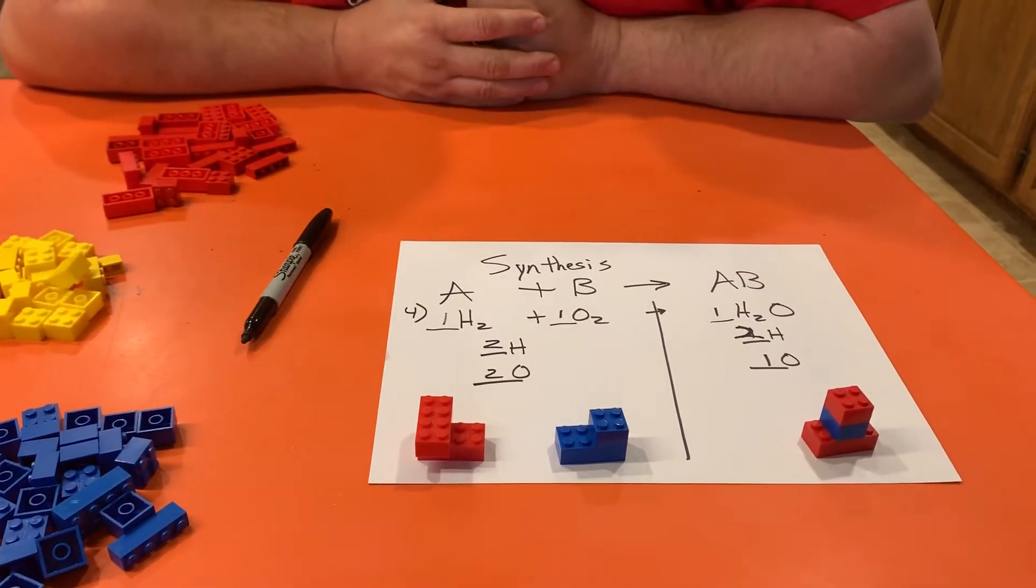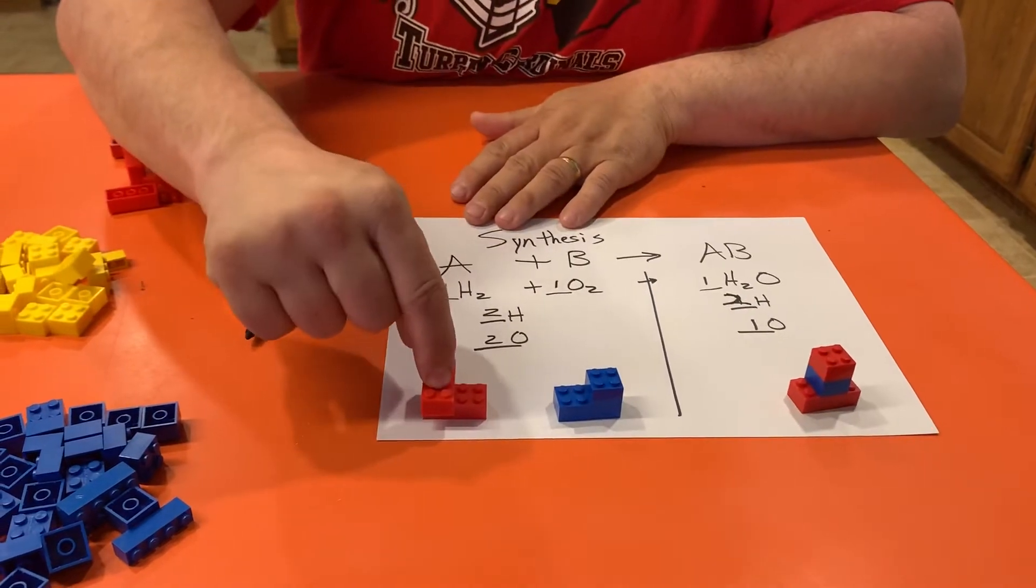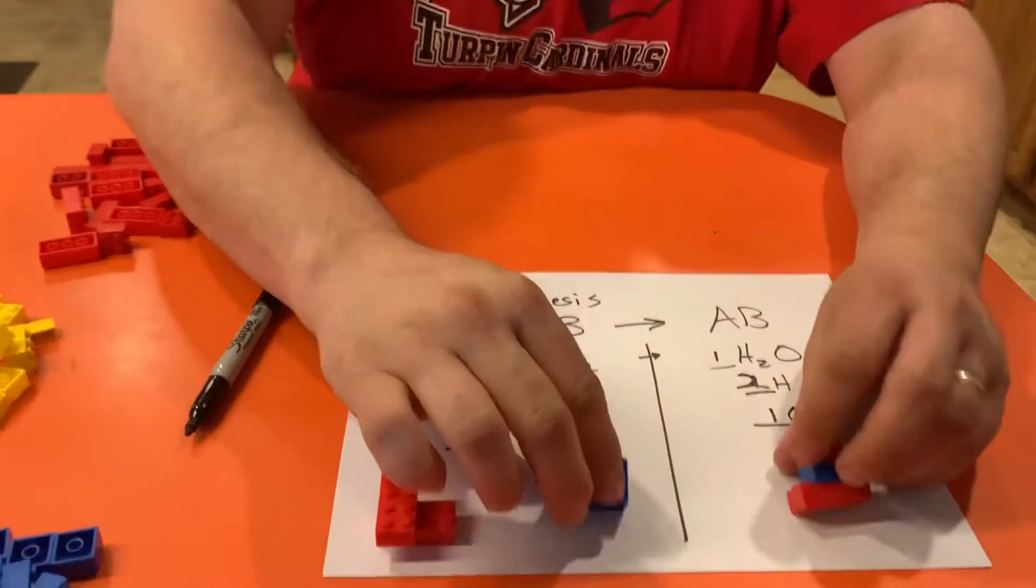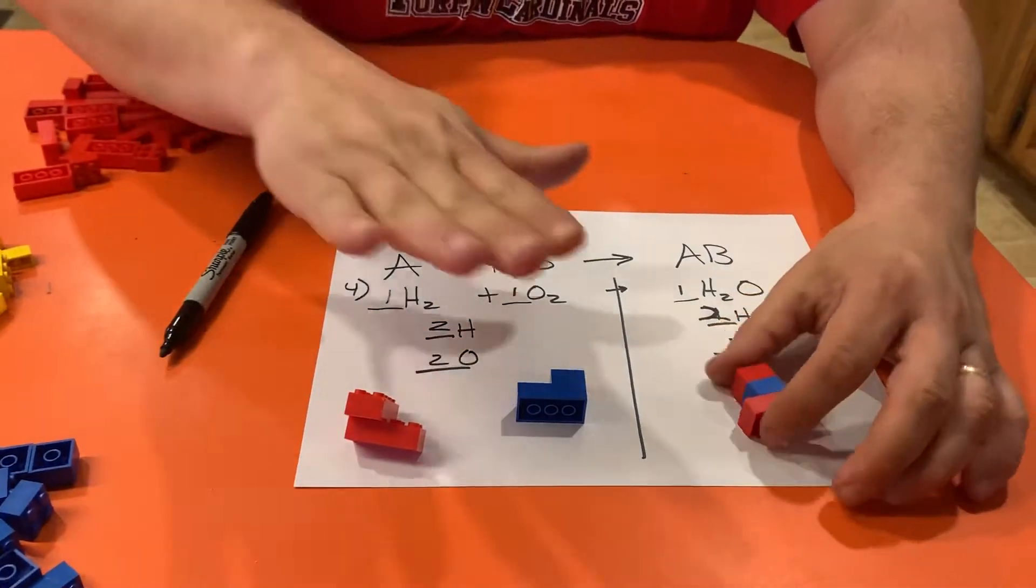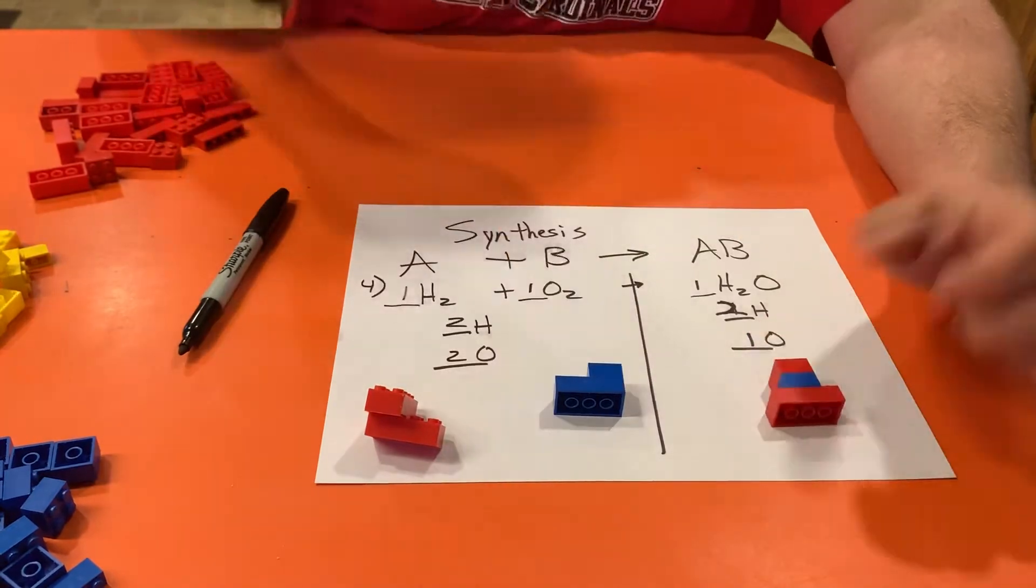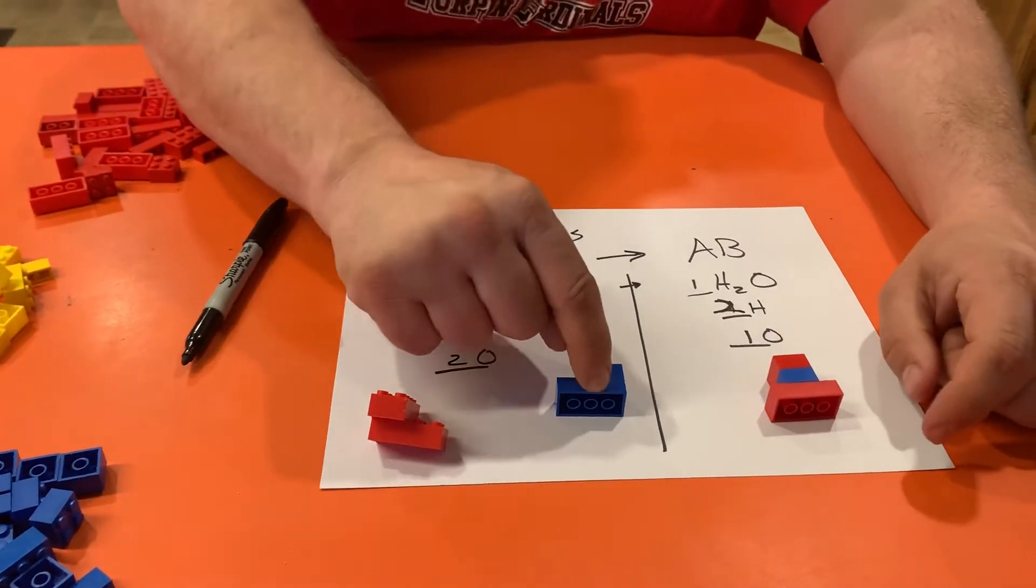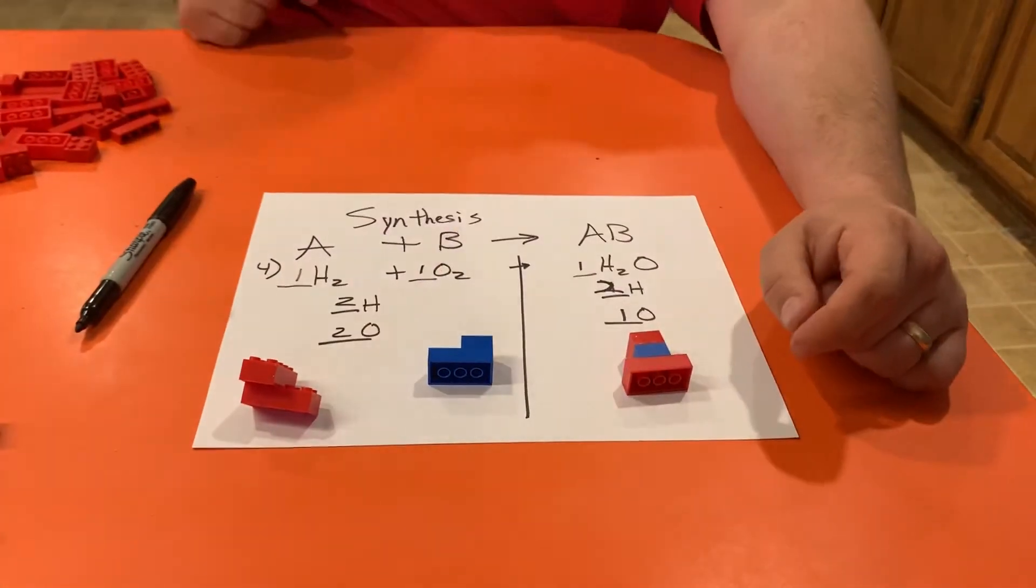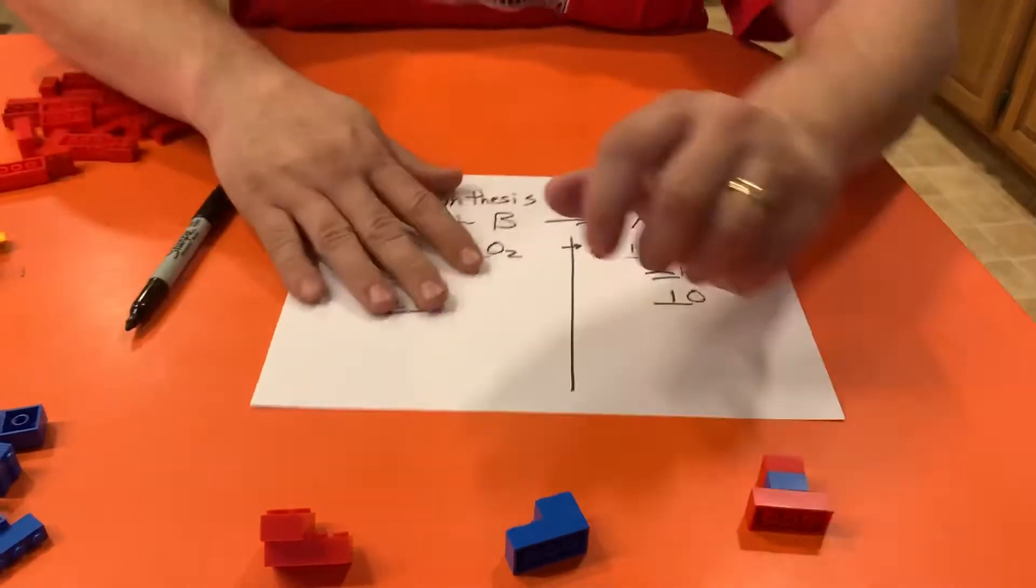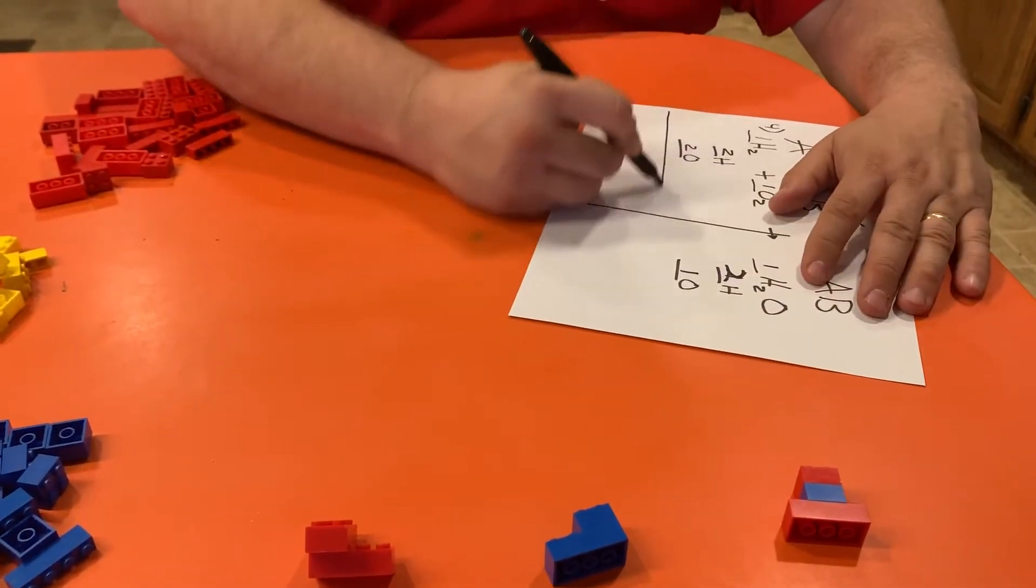Then over on this side for H2O, if I'm using red for my H, there's H2O. So I've got H2 plus O2 makes H2O. And right now you can see I don't have enough oxygens on this side. Here I have two oxygens, here I only have one.